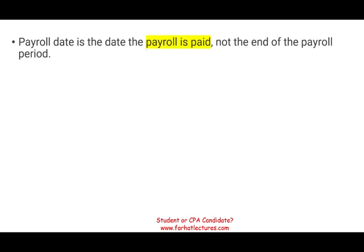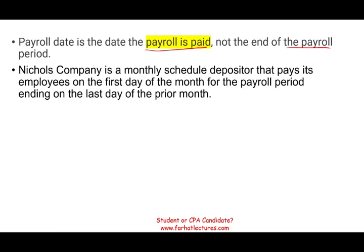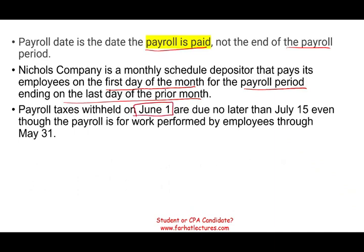Remember, the payroll date is when payroll is paid, not the end of the payroll period — it's when you paid your employee. So if Nicholas Company is a monthly scheduled depositor and pays its employees on June 1st, the payroll tax withheld on June 1st has a due date of no later than July 15th — the 15th of the following month — even though the payroll was for work performed during May. We pay them June 1st, therefore the payment is due July 15th.